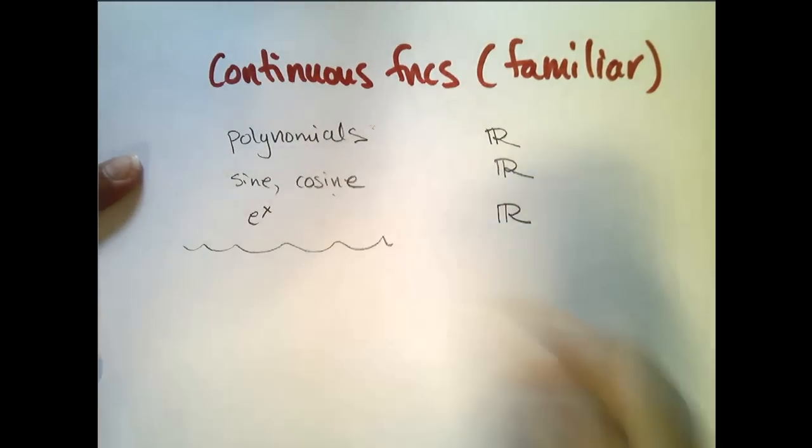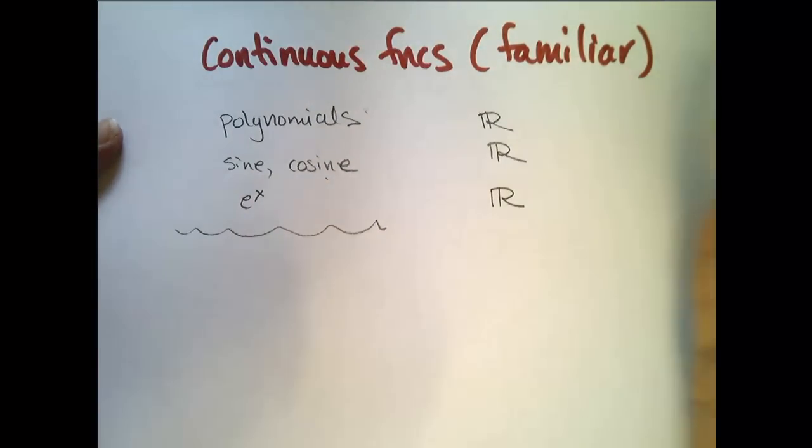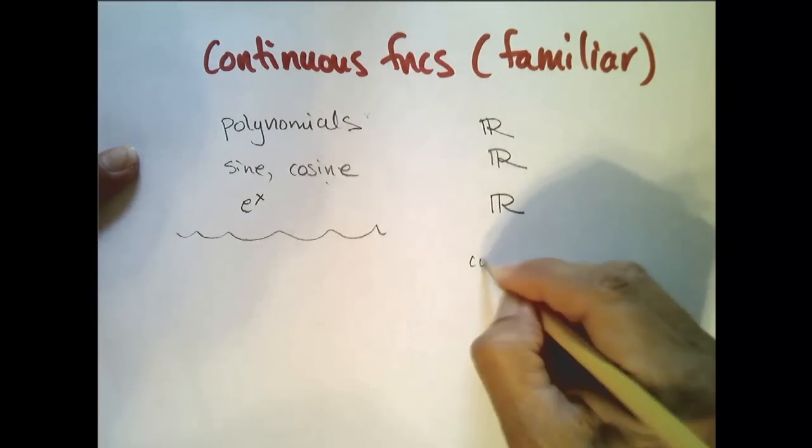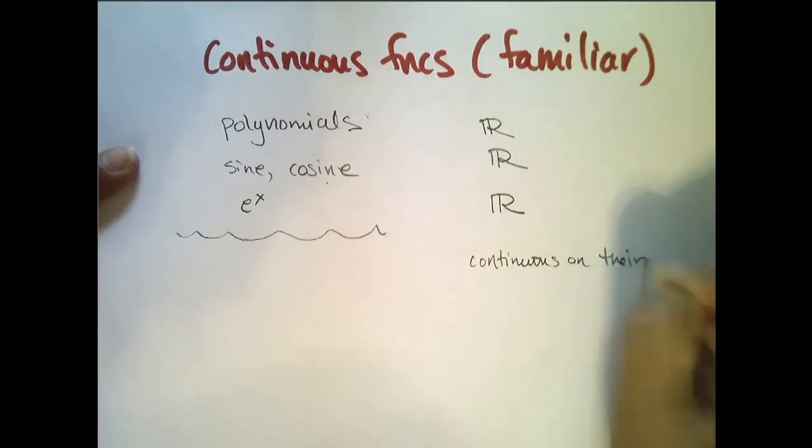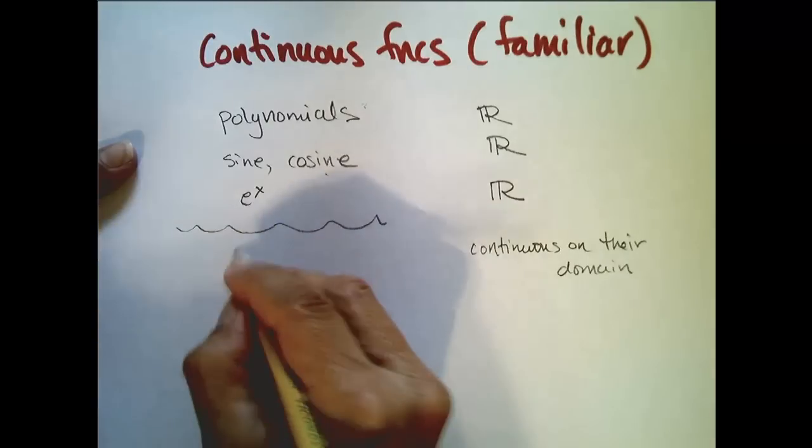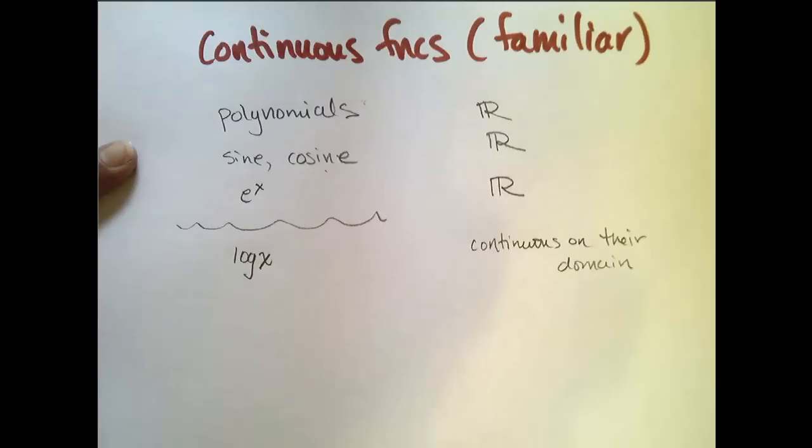Now we have a few functions that are continuous everywhere they are defined. So, we say they are continuous on their domain. And an example would be the log function, log of x. Remember, we can't take the log of a negative number. So it is continuous for all positive numbers.